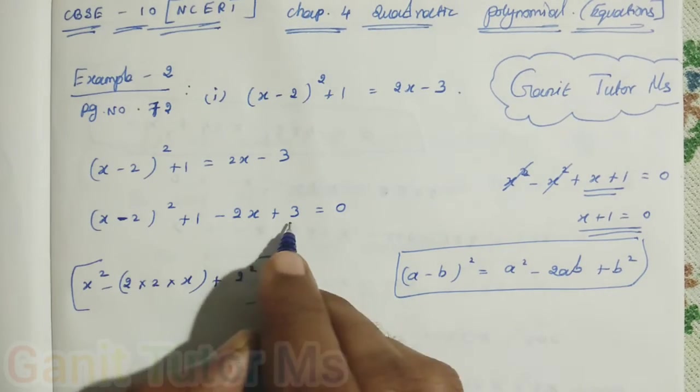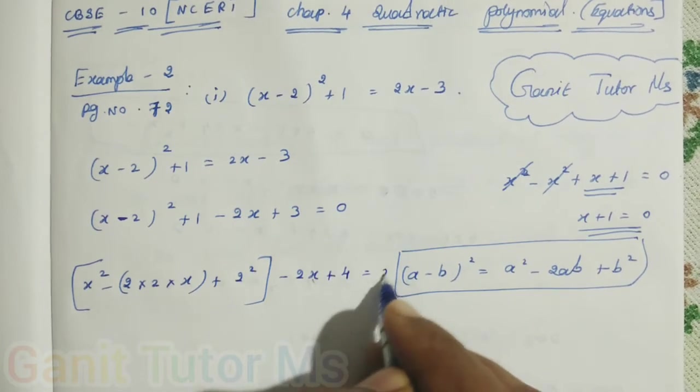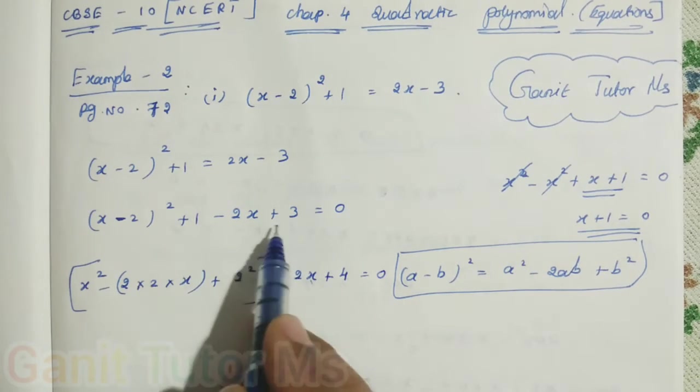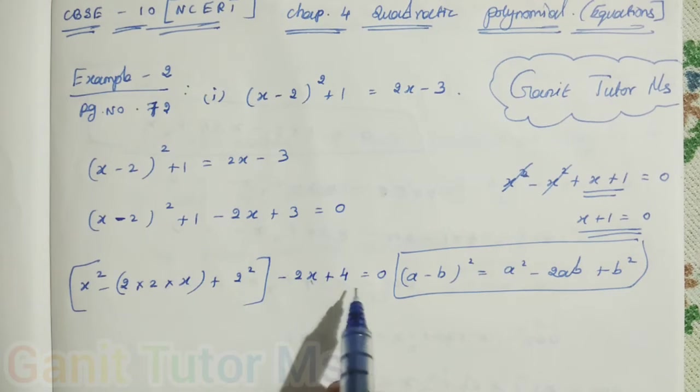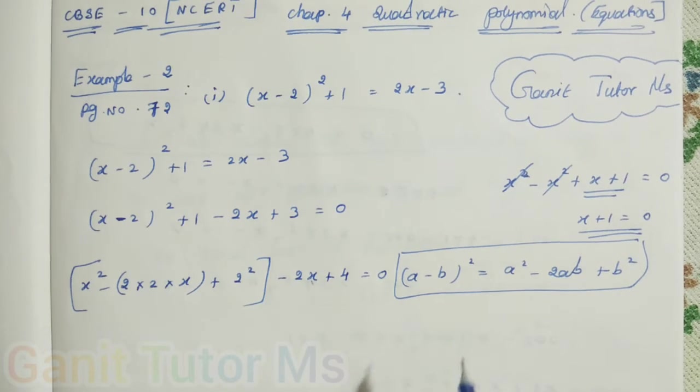Then, plus 2 squared. Then, here plus 1, here plus 3. So, that is plus 4. So, minus 2x plus 4 equal to 0. Here, it is plus 1 plus 3. So, they are the constants. So, I can simply add it and write plus 4. Remaining minus 2x equal to 0.